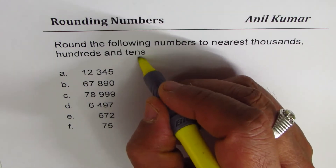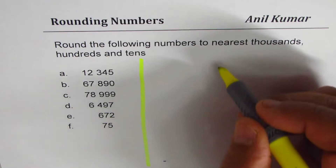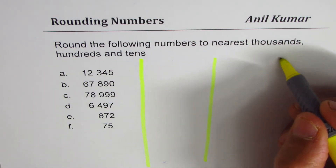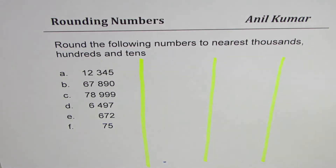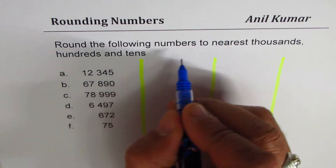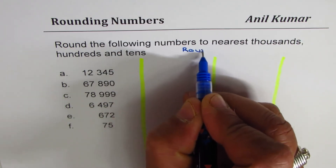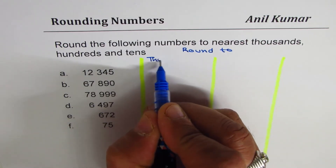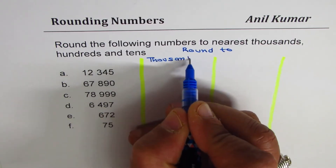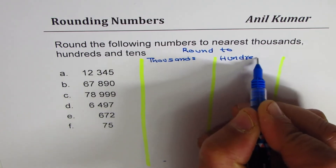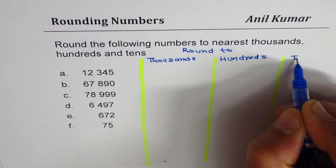I will make some columns so that we can write down our answers after rounding them to thousands, hundreds, and tens. We will write in these columns: round to thousands, round to hundreds, and round to tens.